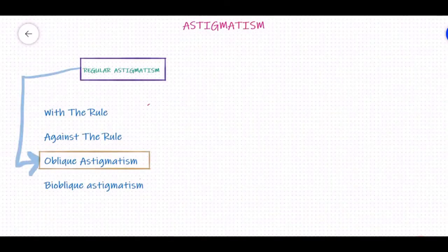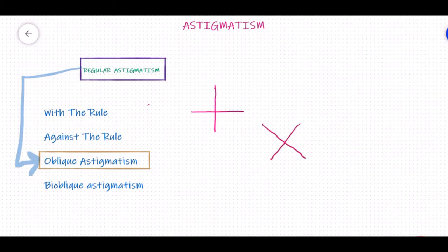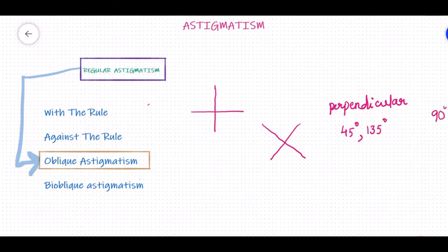The next type of regular astigmatism is oblique astigmatism. Unlike with-the-rule and against-the-rule astigmatism where the principal meridians are at 90 degrees and 180 degrees, in oblique astigmatism the principal meridians are present obliquely. However, they are still perpendicular to each other. For example, if one is at 45 degrees, the other will be at 135 degrees. They are not 90 or 180 degrees, but the difference between them is still 90 degrees, so they remain perpendicular to each other.